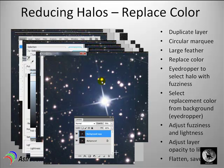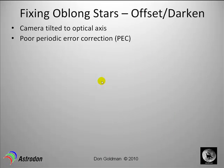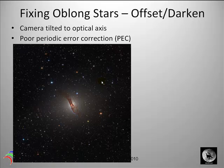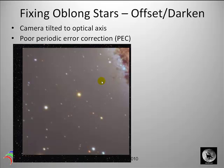This is what we started with, this is what we ended with, and you've reduced your halo. Now, oblong stars happen quite frequently due to tracking or tilting of the optical trail — for example, if you put your camera back on and it's not as snug as it could be. When you look at your overall image there's no problem at this scale, but when you zoom in people will see these oblong stars — even the small ones are oblong.